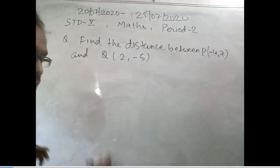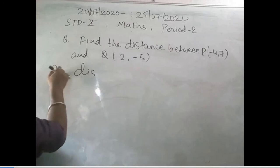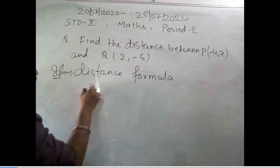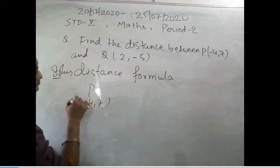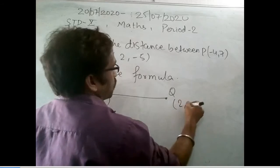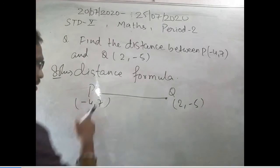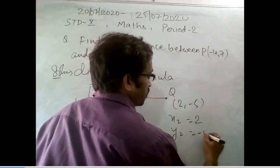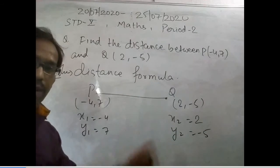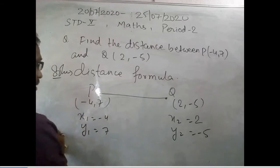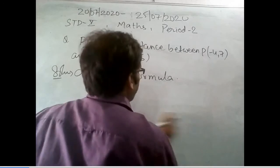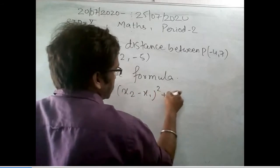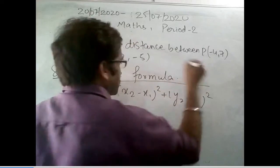Distance formula, we have to find between P and Q. I will draw point P and point Q. Now, -4 and 7 are the coordinates of P, that means x equals -4, y equals 7. So this is the first point, so I am writing x1 and y1. This is the second point, so I am writing x2 and y2. And we have to now find the distance formula, which is: x2 minus x1 whole square plus y2 minus y1 whole square.